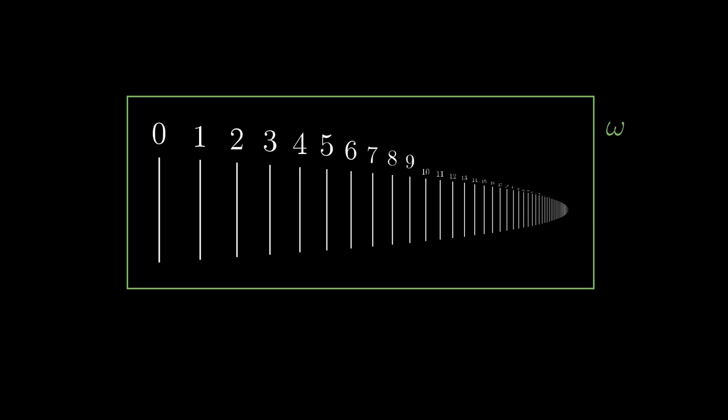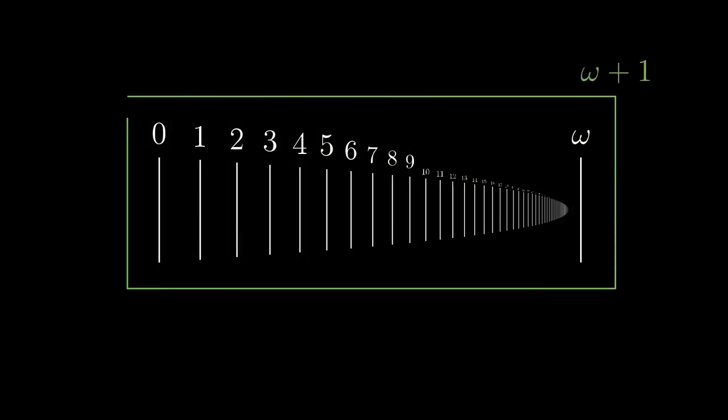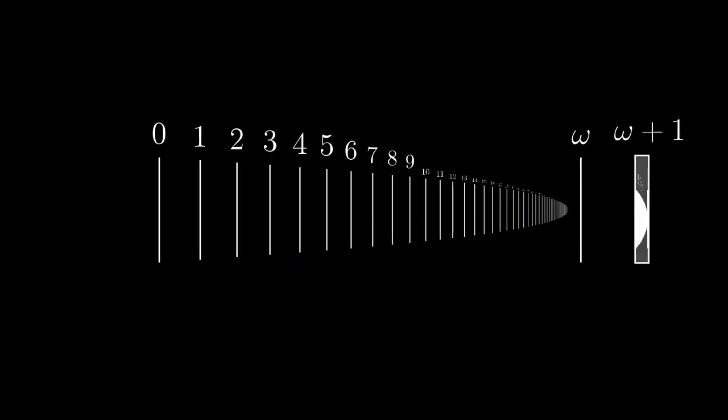Not only does the ordinal omega correspond to the set of natural numbers by its order type — it is nothing else than the set of natural numbers. Then the ordinal omega plus 1 is the set of all the natural numbers together with omega, and we could continue.